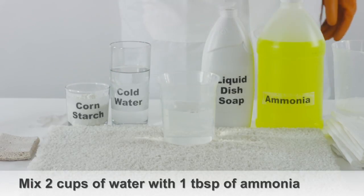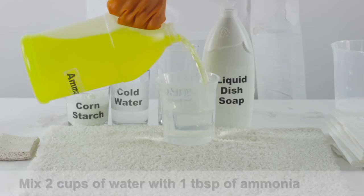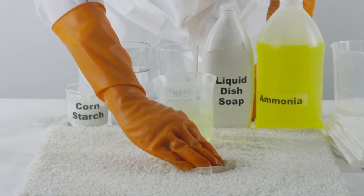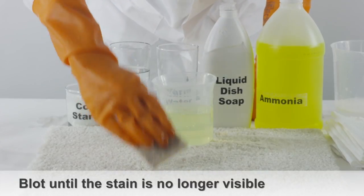Mix two cups of warm water with one tablespoon of ammonia. With a sponge, apply the solution directly onto the stained area of the carpet. Blot the stain until the milk is no longer visible.